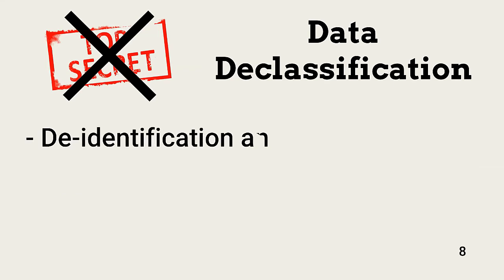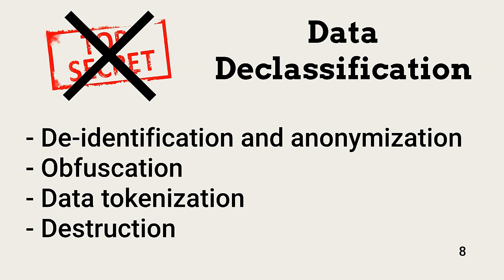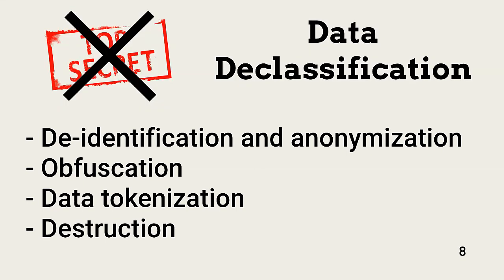Data can be declassified by changing its nature — by changing what it actually contains. This is useful for reducing the risk associated with allowing users access to view information needed to perform business functions. Methods to change data's nature and sensitivity include de-identification, obfuscation, anonymization, data tokenization, and destruction.